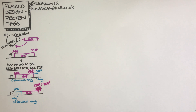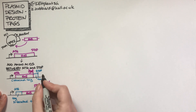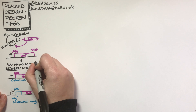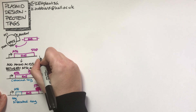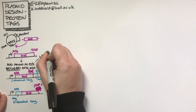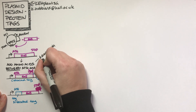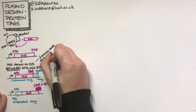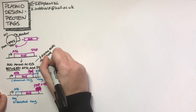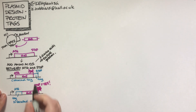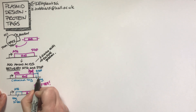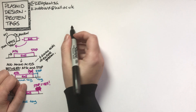We are changing the sequence of the protein by adding some amino acids. This could be quite small — for example just six amino acids — or we could have an entire extra protein as our tag. Some tags are very very small and some tags are really quite big.